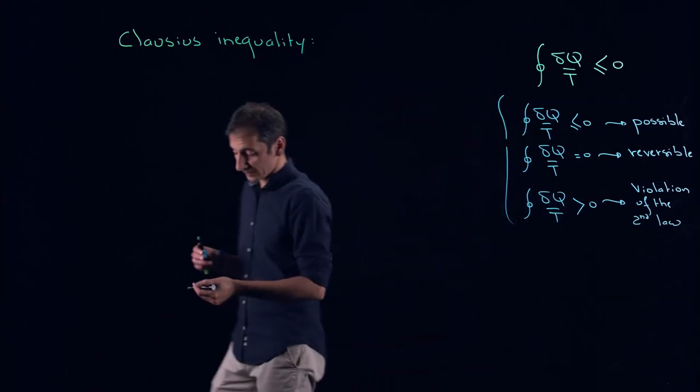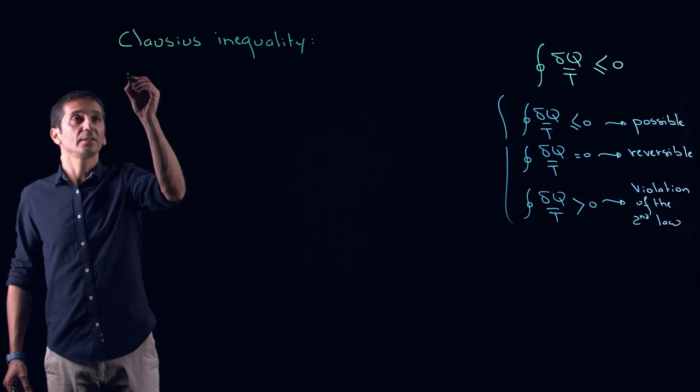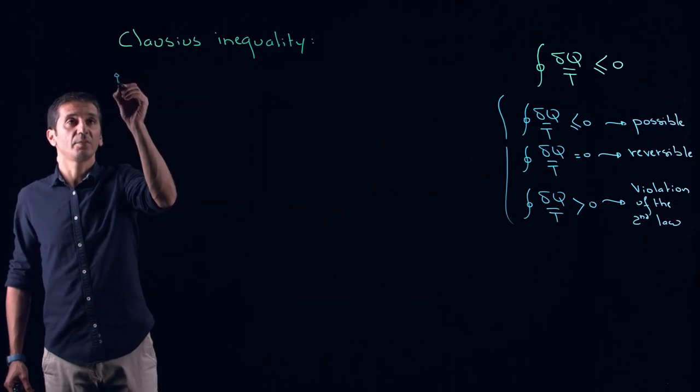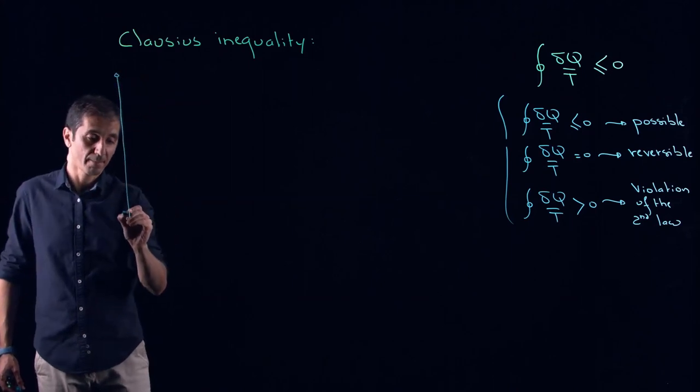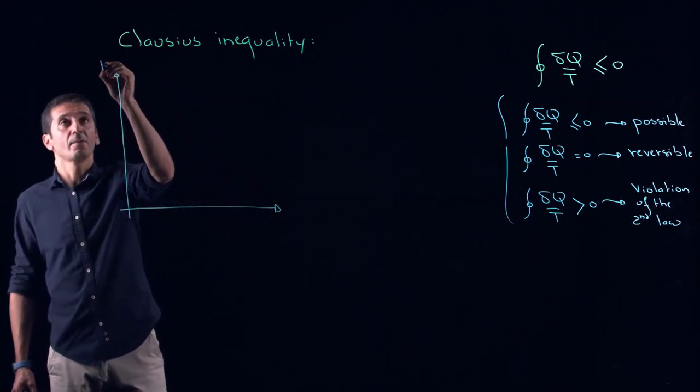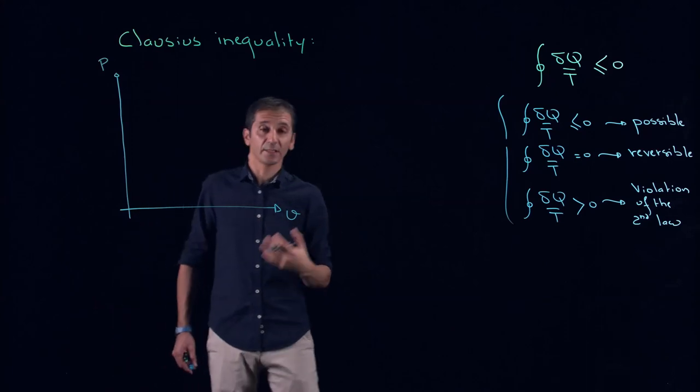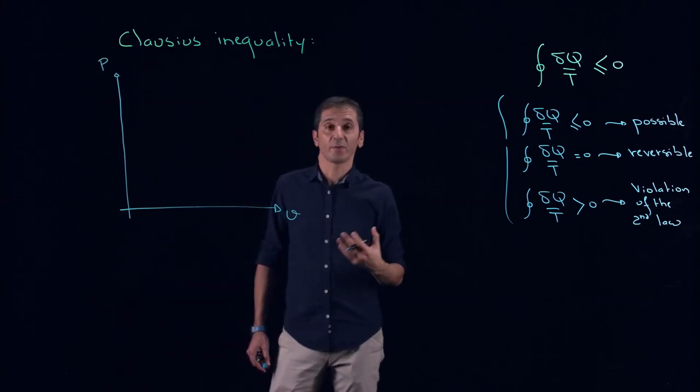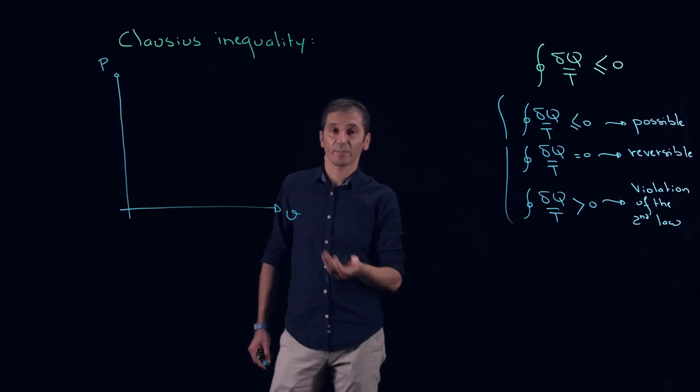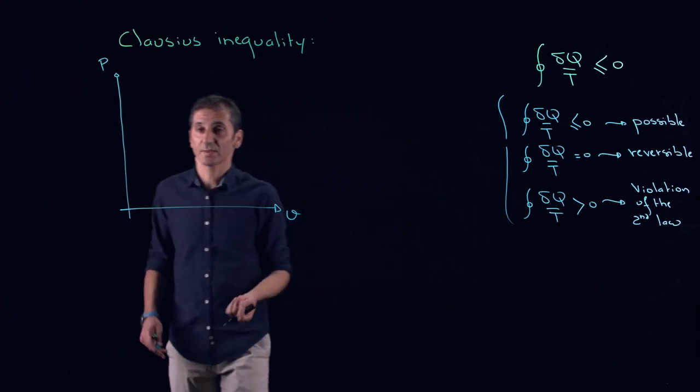To illustrate this, let me sketch here kind of a PV diagram. And if I tell you that at home I have a very smart cat, and this cat is capable of designing or sketching any arbitrary cycle.